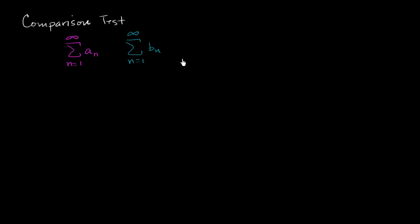The first thing we know is that all of the terms in these series are non-negative. So a sub n and b sub n are greater than or equal to zero, which tells us that these are either going to diverge to positive infinity or they're going to converge to some finite value. They're not going to oscillate because you don't have negative values here, and you can't go to negative infinity.